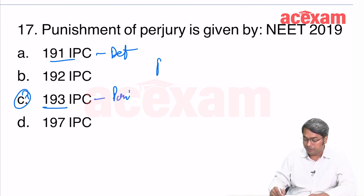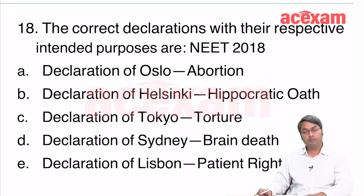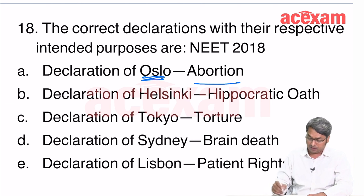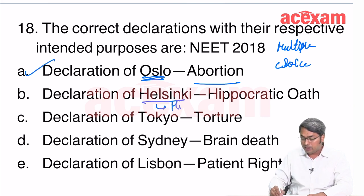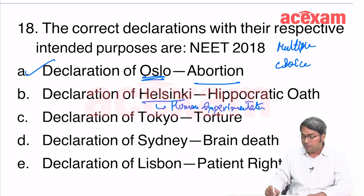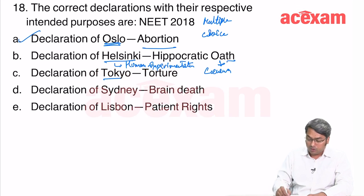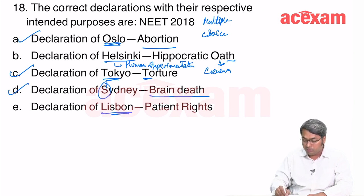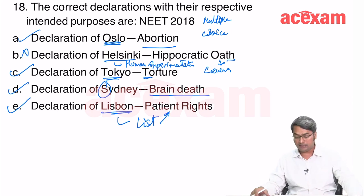Matching declarations with their purposes: Declaration of Oslo — abortion; Declaration of Helsinki — human experimentation (H for H); Geneva Declaration — Hippocratic oath; Declaration of Tokyo — torture (T for T); Declaration of Sydney — brain death; Declaration of Lisbon — patient rights. The only incorrect option here is Helsinki being matched to anything other than human experimentation.